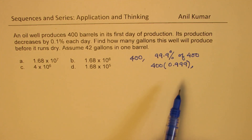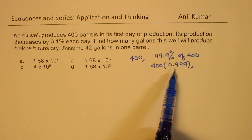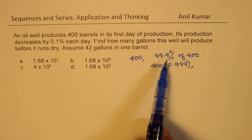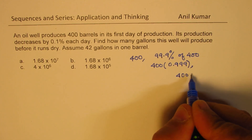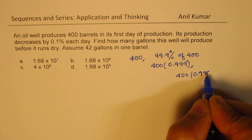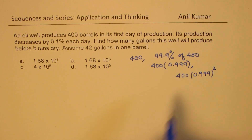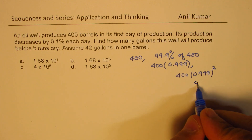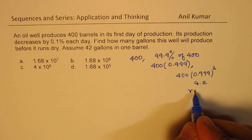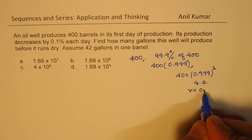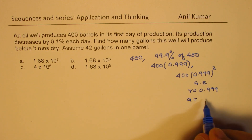Then the next day, it is going to be 99.9% of this — 0.1% less. So that would be 400 times 0.999 squared. As you can see, it is a geometric series, where the multiplication factor R is 0.999 and the initial value A is 400.